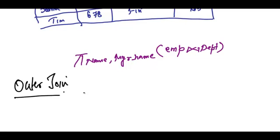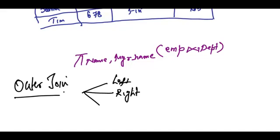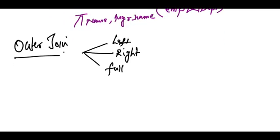Outer join — there are three types: left outer join, right outer join, and full outer join. Let's talk about left outer join.